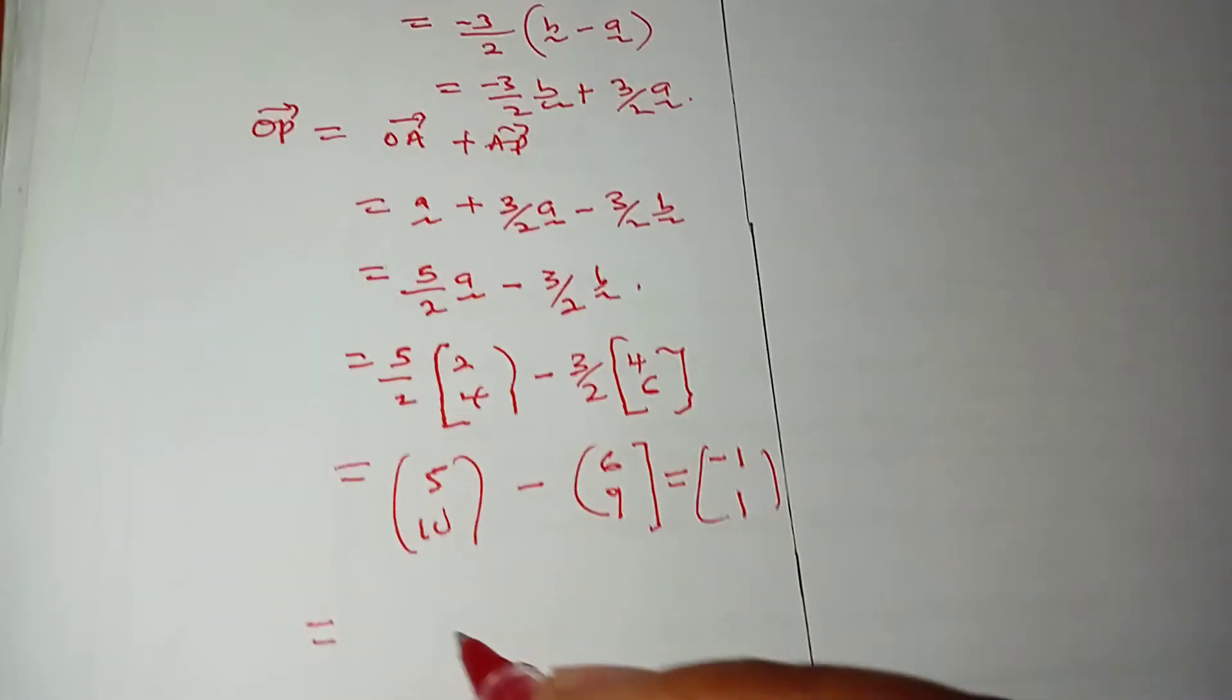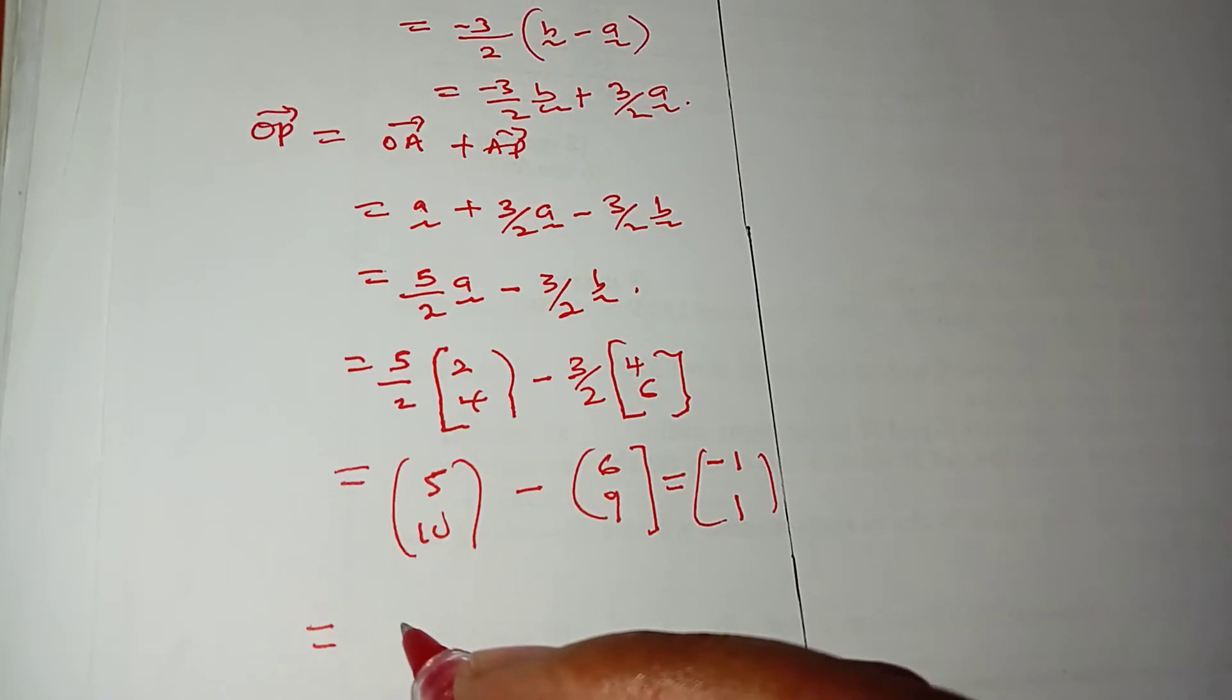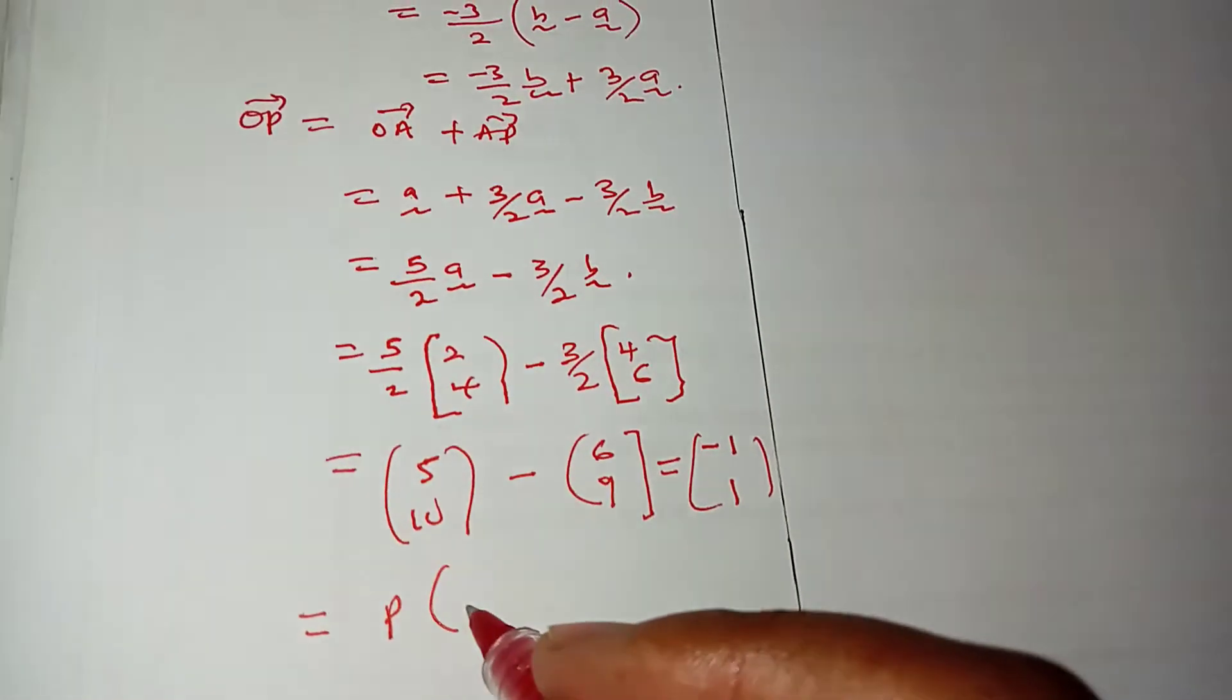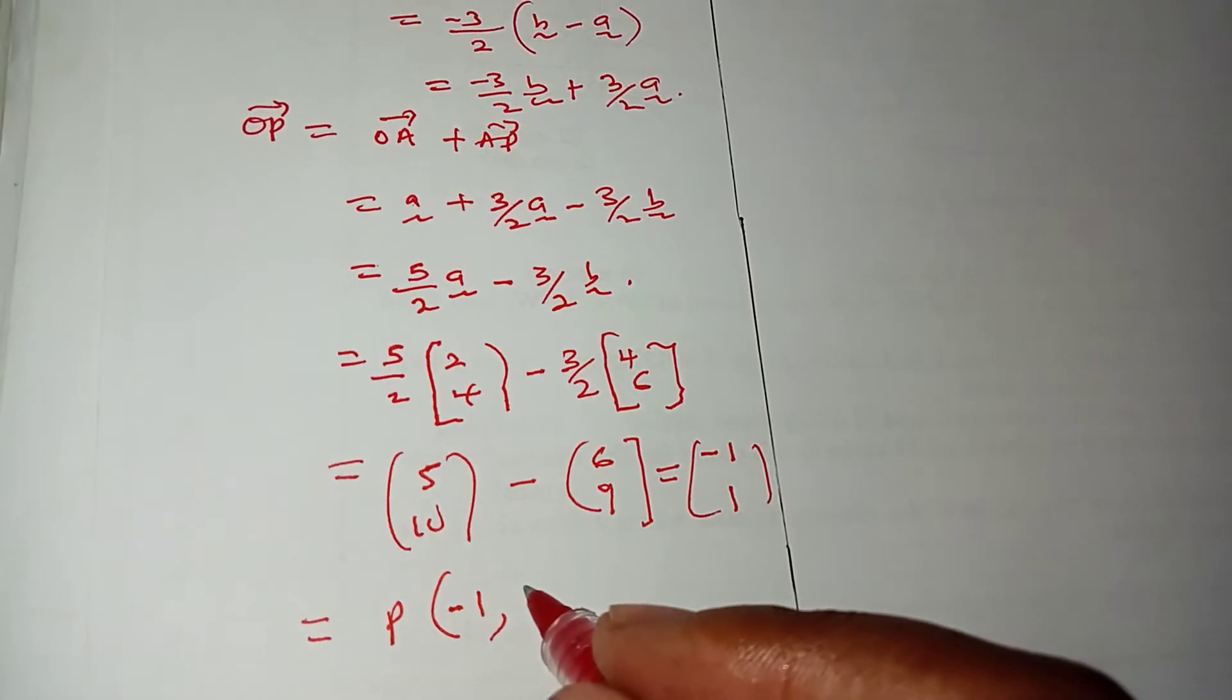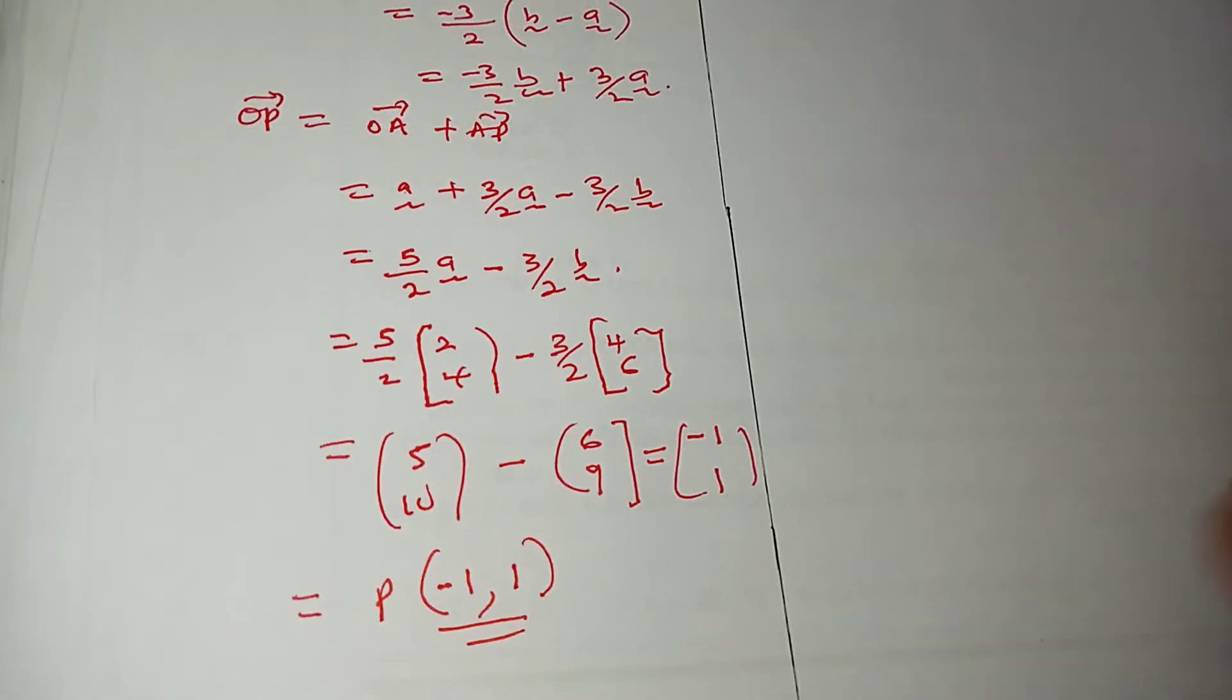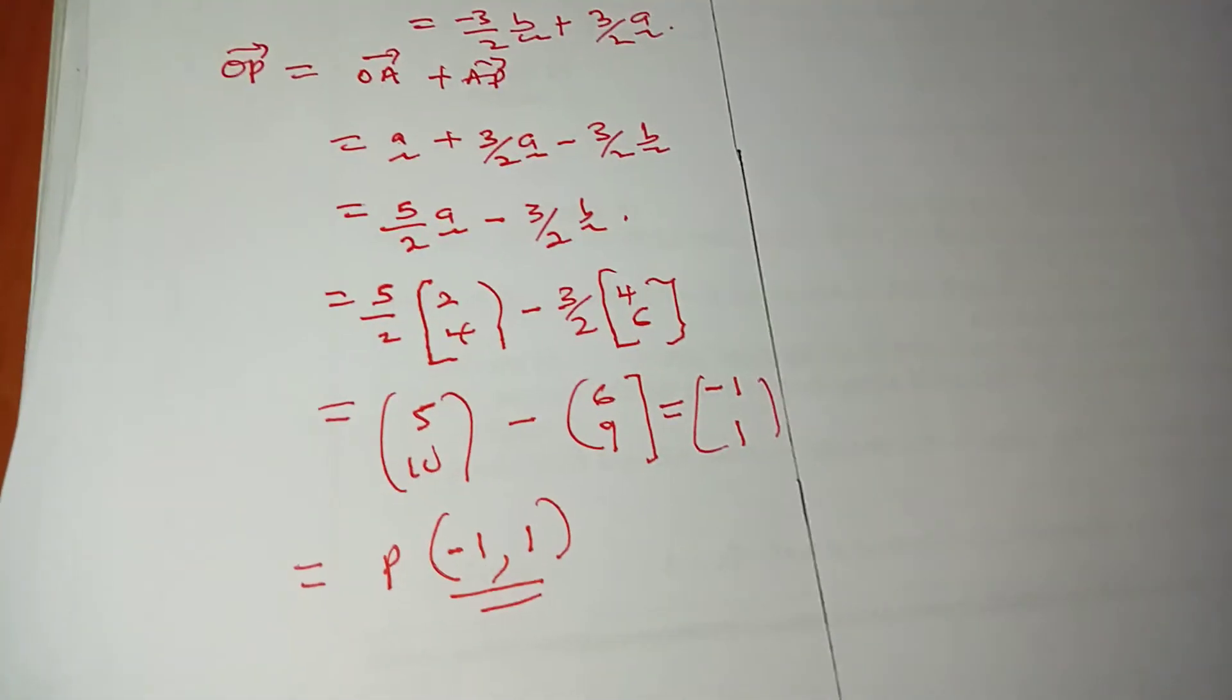We are comfortably at a point where we have located our P, which is -1. That's the X value, and Y value is 1. So that's the coordinate of P that divides the line segment AB externally in the ratio -3:5.